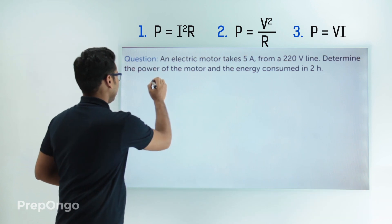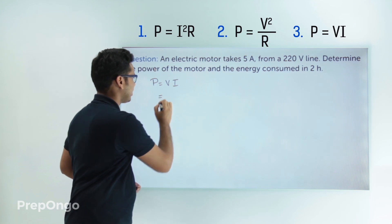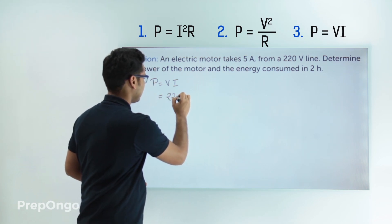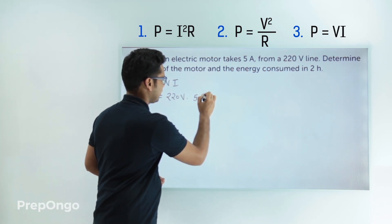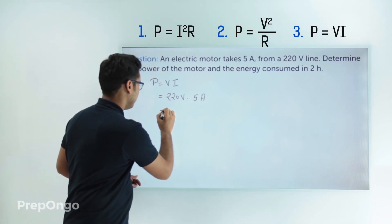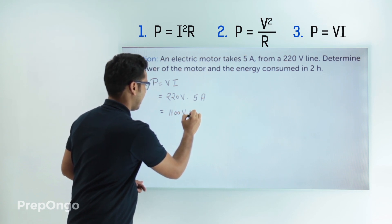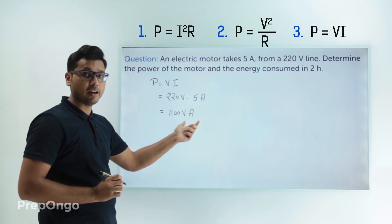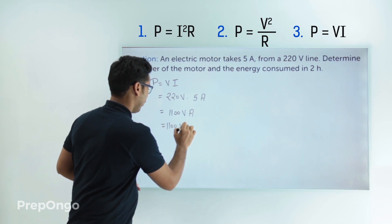So we can write down that power equals V×I. Now just put the values: V is 220 volts and the value of current is 5 amperes. 220 into 5 gives 1100 volt-amperes, and we know that volt-amperes is nothing but watts. So the power is 1100 watts.